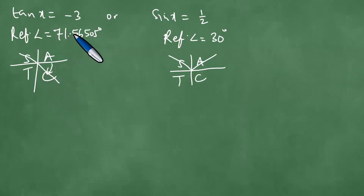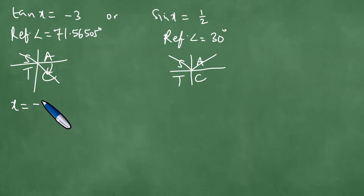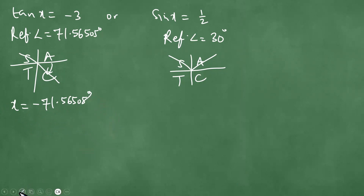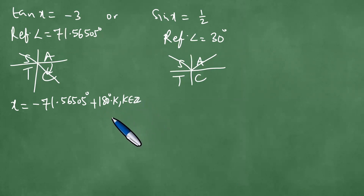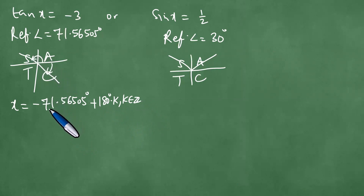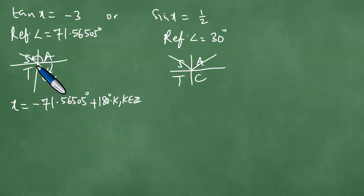An angle in the fourth quadrant will be the negative of the reference angle, so x = -71.565 degrees plus 180 degrees times k, where k is an element of the integers. This solution takes care of both the second and fourth quadrant solutions for tan(x) = -3, since the second quadrant value of 180 - 71.565 degrees is already accounted for.